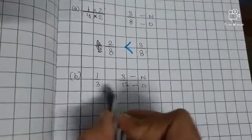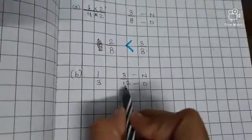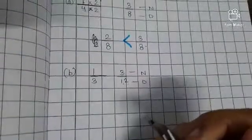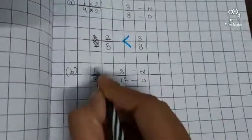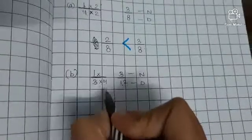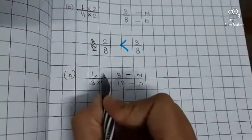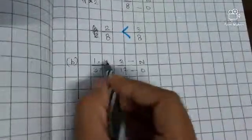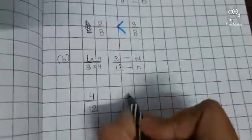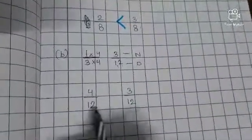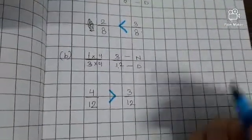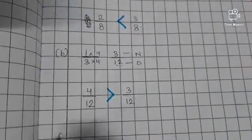So what will we do? We will make the denominators the same. Between 12 and 3, the bigger number is 12. So we will also make 3 into 12. To make 3 into 12, what number do we multiply 3 by? 12 comes 4 times in the 3 table — 3 × 4 = 12. Multiply both the numerator and denominator: 1 × 4 = 4 upon 3 × 4 = 12, and 3 upon 12 we write as it is. Now both denominators are the same: 12 and 12. So which one is greater? 4 by 12.